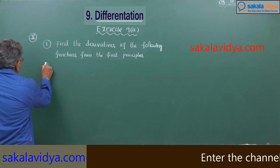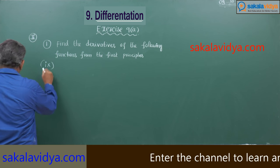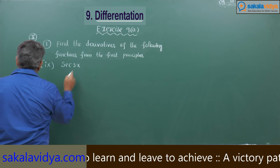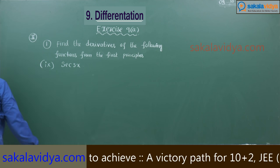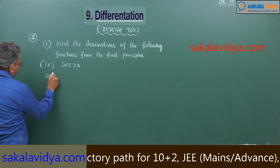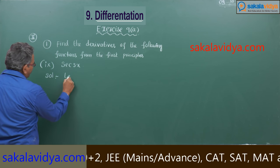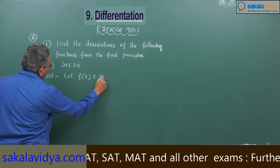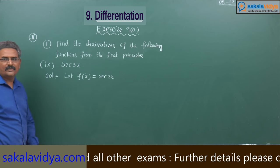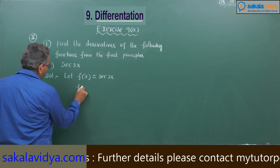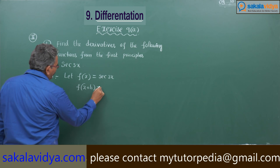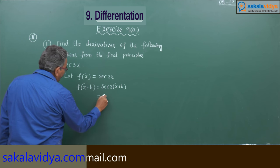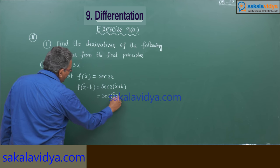9th problem: secant 3x. Solution. Let f of x is equal to secant 3x. Now, f of x plus h equals secant of 3(x plus h), which is secant of 3x plus 3h.